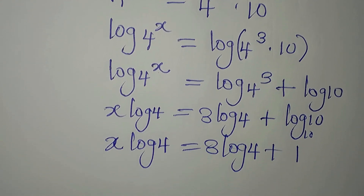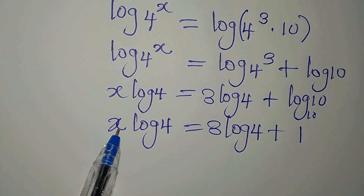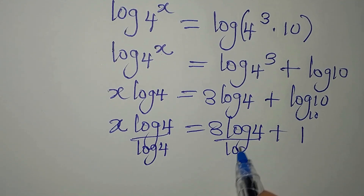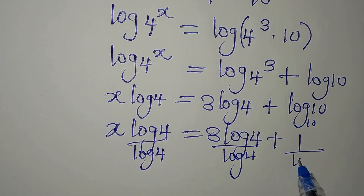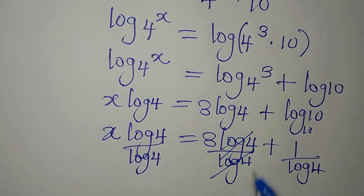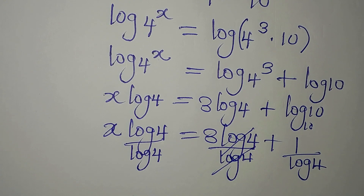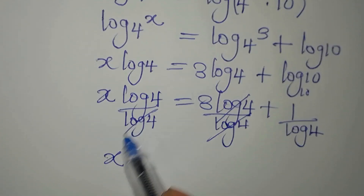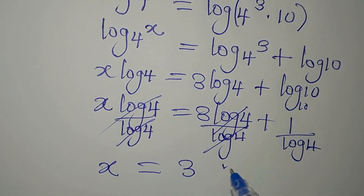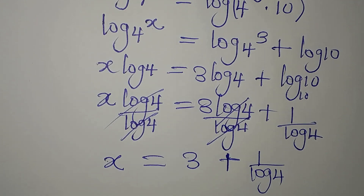We are still looking for the value of x, so we divide everything by log 4. Dividing by log 4 cancels the log 4 terms, so we have x equals 3 plus 1 over log 4.